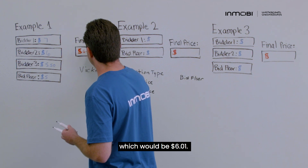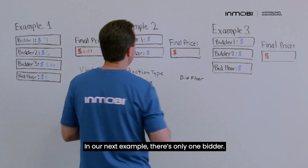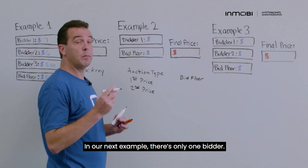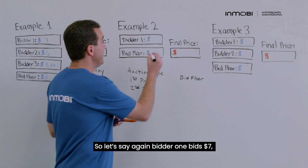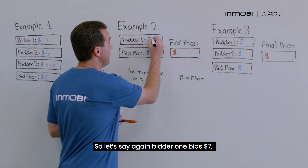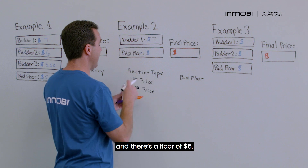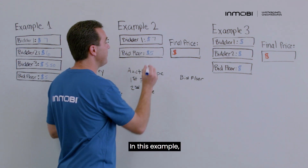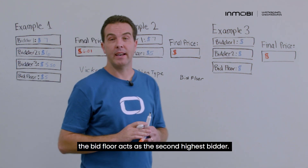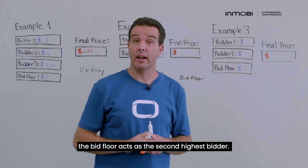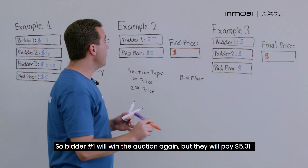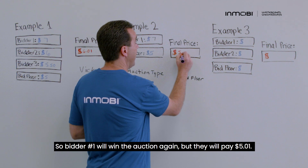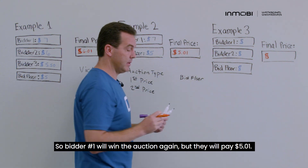In our next example, there's only one bidder. Bidder One bids seven dollars and there's a floor of five dollars. In this case, the bid floor acts as the second highest bidder, so Bidder One wins the auction but pays five dollars and one cent.